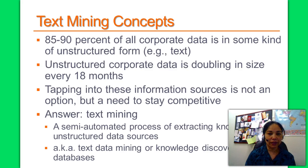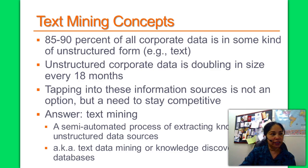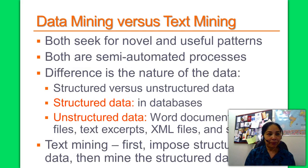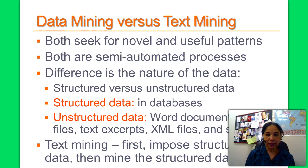Text mining is the process of finding patterns or useful information from large amounts of unstructured data sources. Both data mining and text mining seek novel and useful patterns, and both are semi-automated processes. The difference is in the nature of the data: data mining uses structured data as found in a database, while text mining uses unstructured data such as word documents, PDF files, text excerpts, and XML files. In text mining, you first impose structure to the data, then mine the structured data.